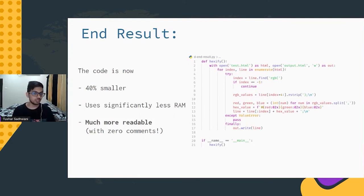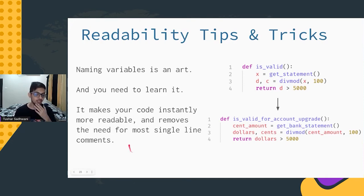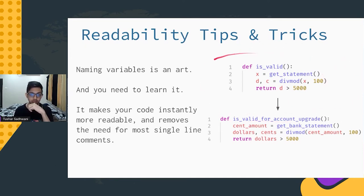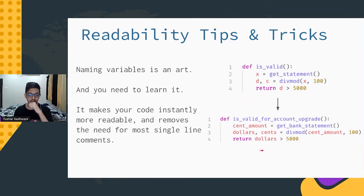That was the main part of the talk. Now I have a few tips and tricks for improving the readability of your code. The first and most obvious one is to use proper names for your variables. If you look at a piece of code with poor variable names, it's pretty much impossible to tell what it's trying to do. But the same code with much better variable names — you can figure out what's going on in about five seconds.